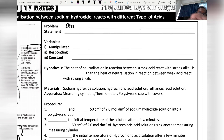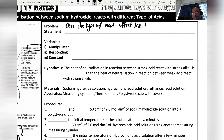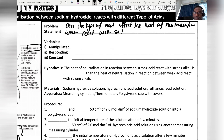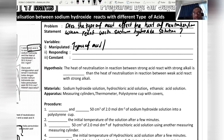The problem statement is: Does the type of acid affect the heat of neutralization when it reacts with sodium hydroxide solution? The manipulated variable is the type of acid: acid Y is hydrochloric acid.